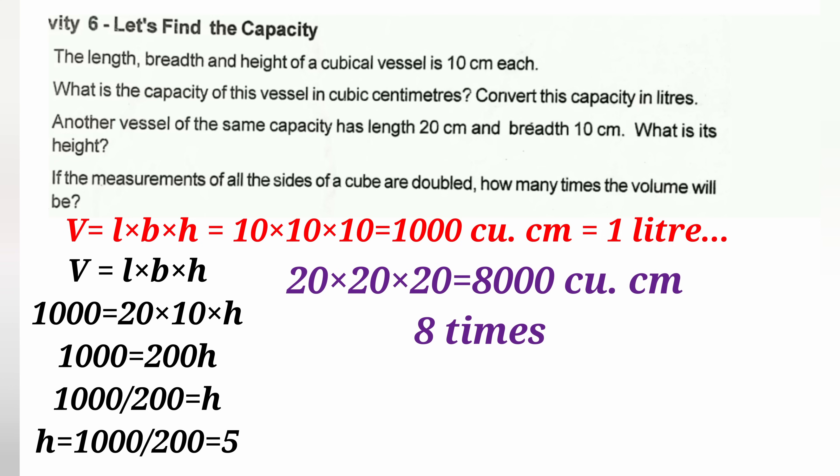Another vessel of the same capacity has length 20 cm and breadth 10 cm. Since the capacity (volume) is the same at 1,000 cubic centimeters, we use V = L x B x H. So 1,000 equals 20 x 10 x H, which means 200H equals 1,000, giving H equals 1,000 divided by 200, which equals 5 cm.